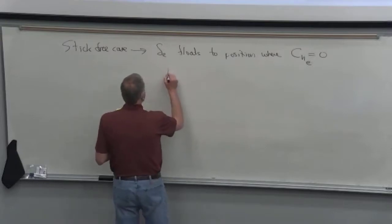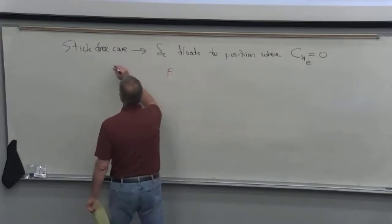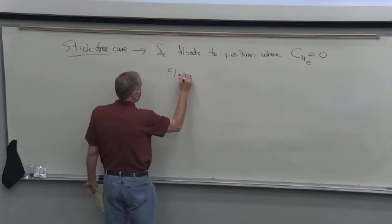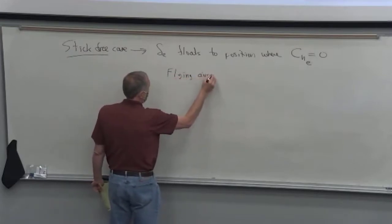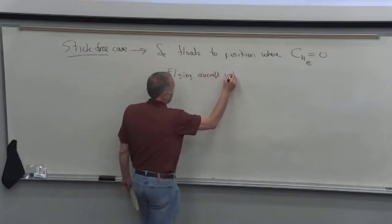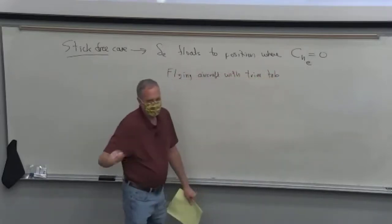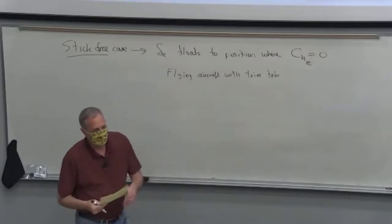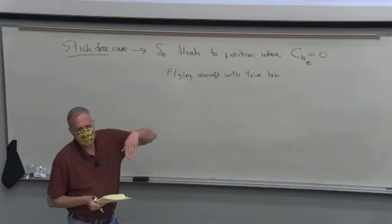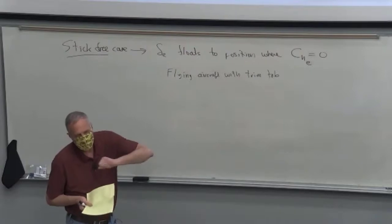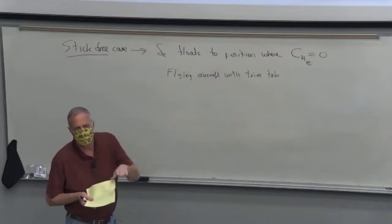What this means is if the pilot is letting go of the stick, he's kind of flying the aircraft with the trim tab. So he sets the trim tab to a certain setting. The elevator floats to where the hinge moment is zero. And hopefully that's the trim value for the elevator, but you don't know. And so he'll adjust the trim tab to move the elevator, and then that pitches the airplane up and down.